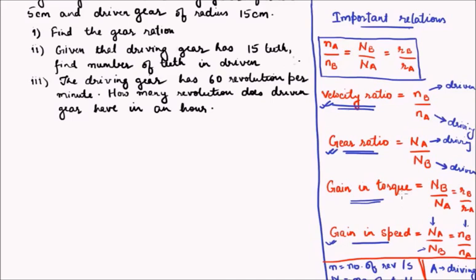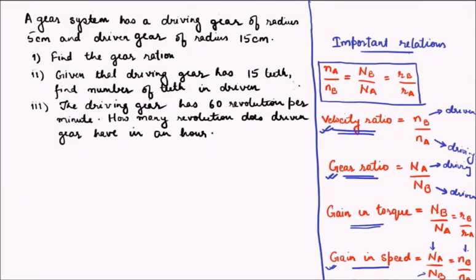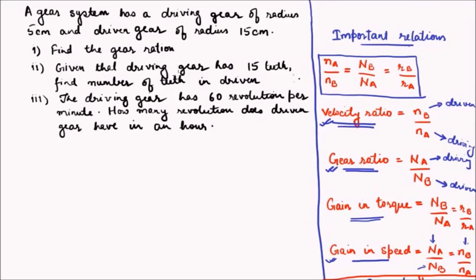Now that we have revisited all the important relations which are used in a gear system, and we have seen a couple of concepts which we missed out in our previous lecture, let us use this knowledge to solve the given numerical. What does it say? It says that driving gear has a radius 5 cm. So let me write it down. Driving means A, so Ra is 5 cm. And that driven gear is 15 cm, so Rb is 15 cm.